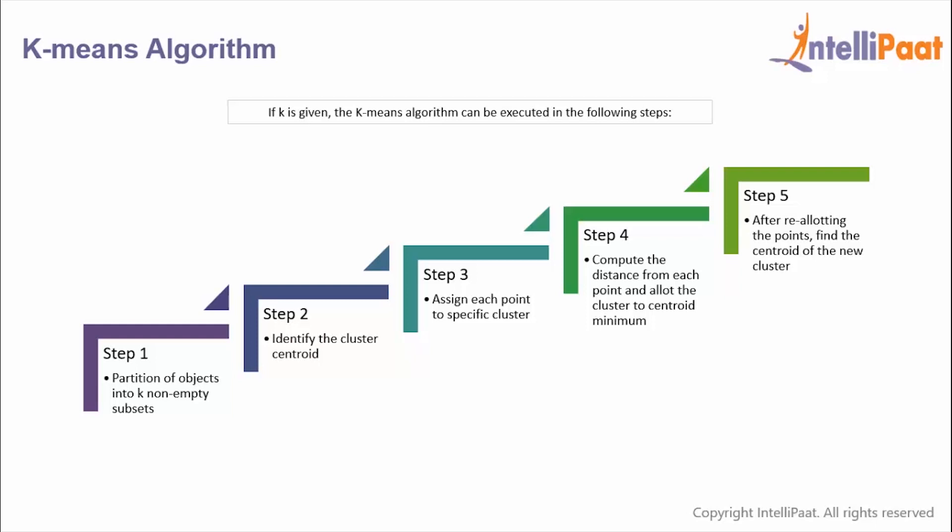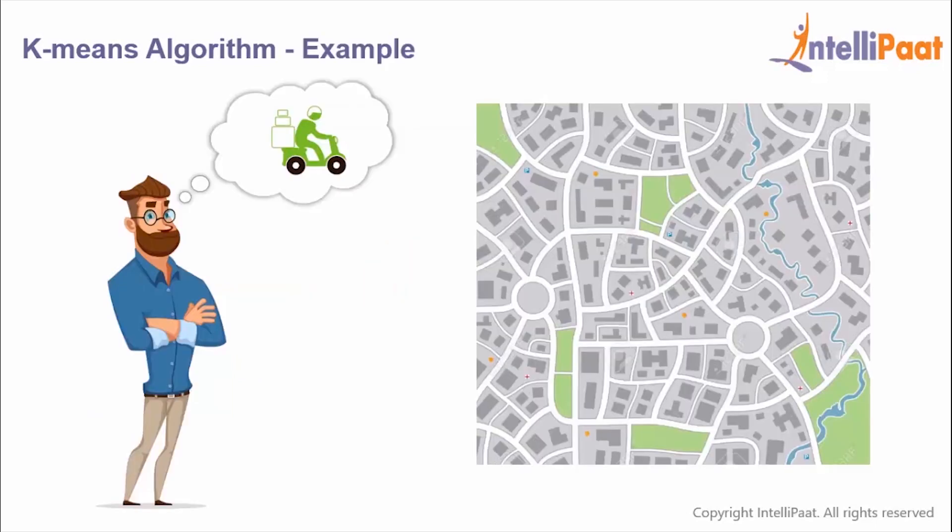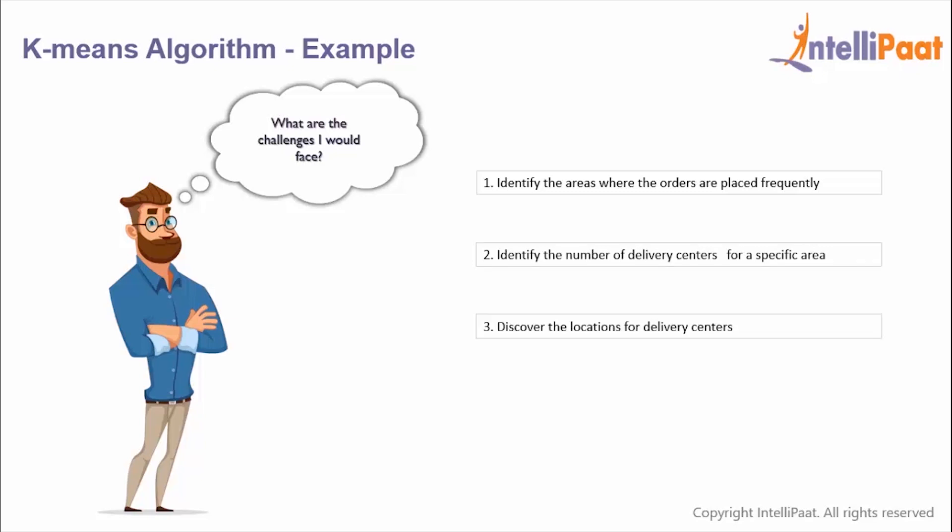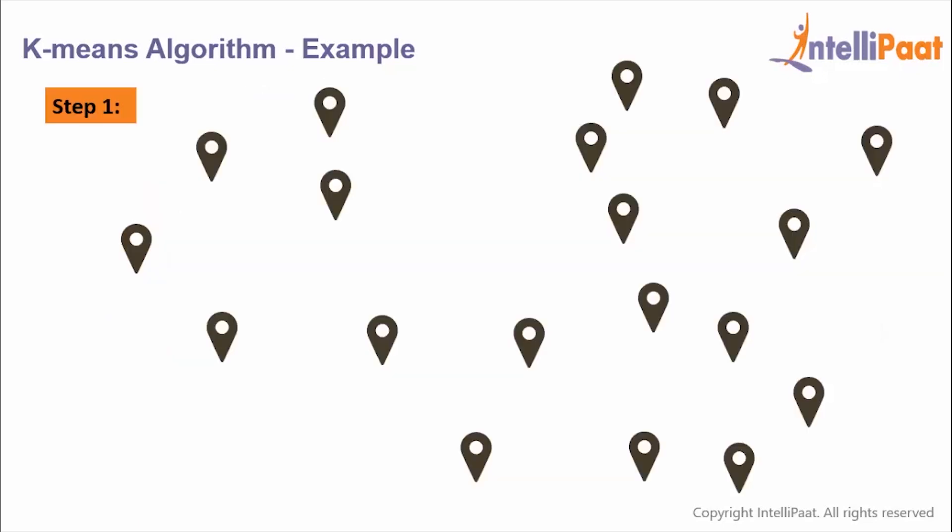Let's actually take an example to understand it in a better way. Consider that you started a new home delivery service for a supermarket and you want to open three delivery centers in the city. First you need to identify the possible challenges: You need to identify the areas from where orders are placed frequently, then identify the number of required delivery centers to cover the specific area, and finally discover the locations for delivery centers to be established in order to keep the distance between supermarket and delivery points minimum. Clustering makes life easy by solving such real-life challenges. Consider these points as most probable locations in which orders are placed frequently. Now these three points are considered as the delivery centers which cover the area more efficiently, that is, the distance from delivery centers to delivery point is least. These would act as the centroids or cluster centers.